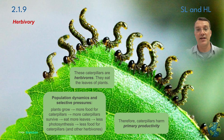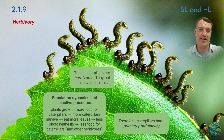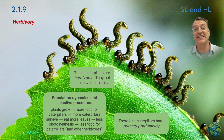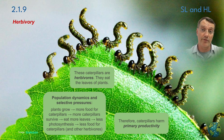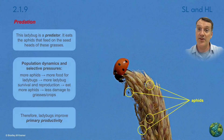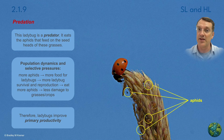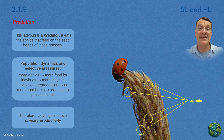Herbivory is exemplified by caterpillars feeding on plants — it's basically hunting plants — and herbivory can significantly impact primary productivity. The more herbivores there are, the more herbivory occurs, and the lower the plant populations go.